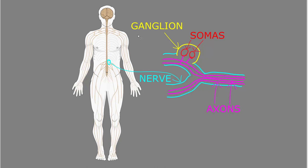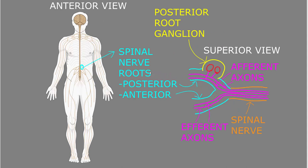The peripheral nervous system also contains ganglia, which are small lumps attached to many nerves that contain neuron somas, or cell bodies. A subset of the nerves are spinal nerves that are attached to the spinal cord. Here we're looking at the body from the front in the anterior view, and here we're blowing up a spinal nerve.